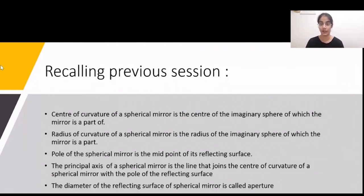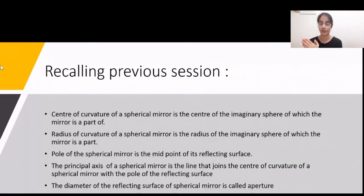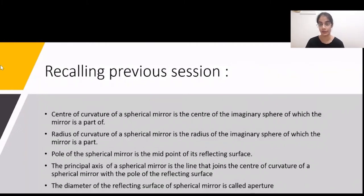These were all the technical terms related to the spherical mirror, useful when discussing image formation through ray diagrams. If incident rays from an object's point meet at a point after reflection, that point is termed the image of the object. We will now discuss image formation on convex and concave mirrors.